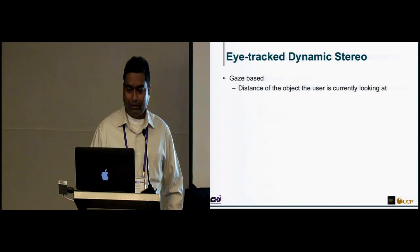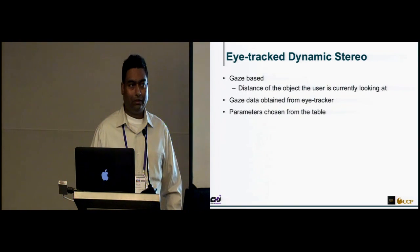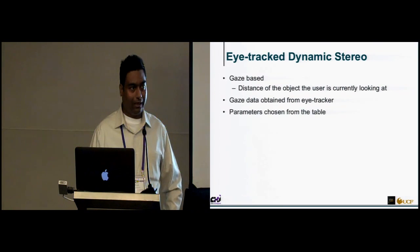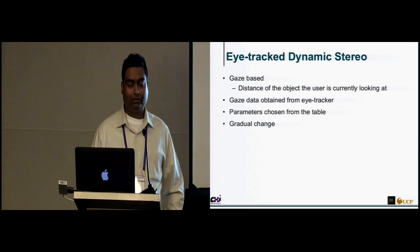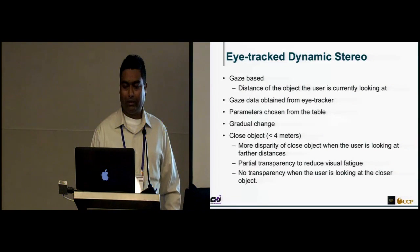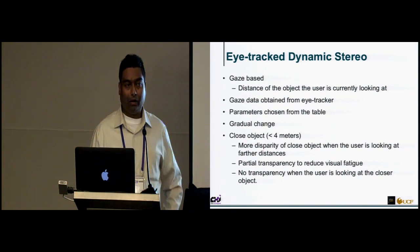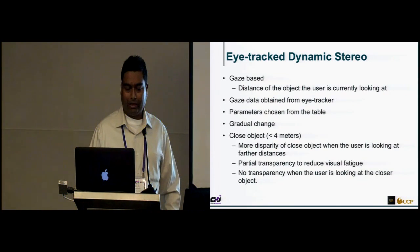In the eye-tracked dynamic stereo case, we optimize parameters based on where the user is looking and the distance of that object, obtaining gaze data from an eye tracker. Parameters are changed gradually so the user does not perceive the changes. When a closer object is present but the user is looking at much farther distances, the disparity for the closer object is large, so we make the closer object partially transparent to reduce discomfort. The transparency is removed when the user looks back at the closer object.